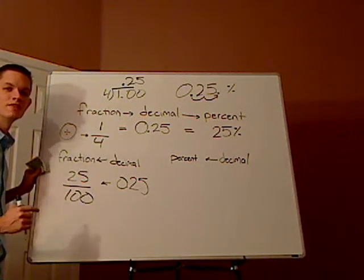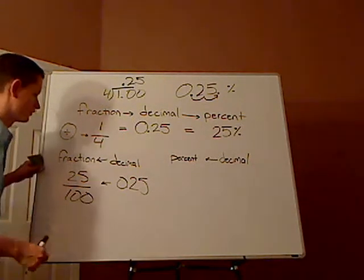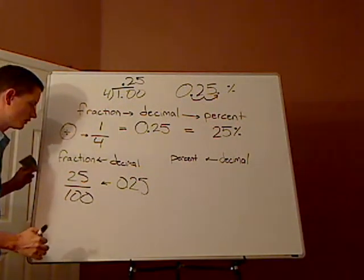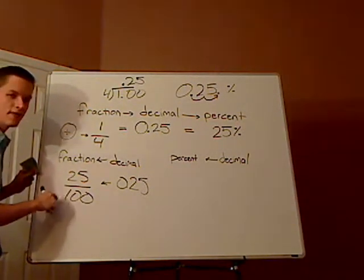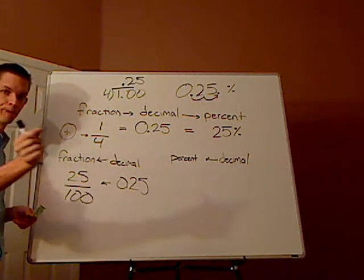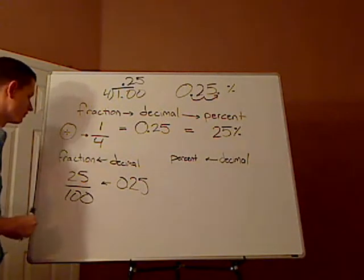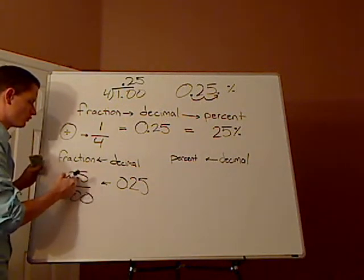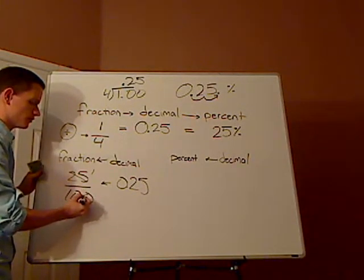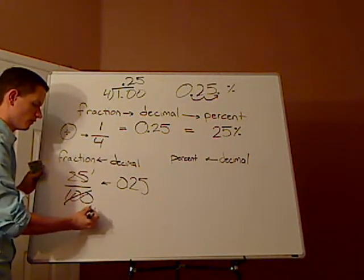Right? That's 0.25 hundredths. So since it's that, then you can just simplify. What goes into both 25 and 100? A quarter. 25. So 25 goes into 25 once, and then 25 goes into 100 four times.